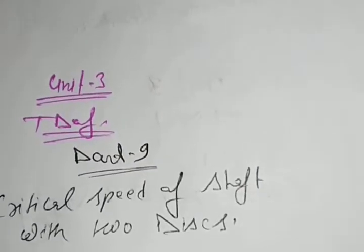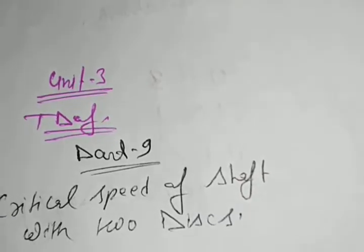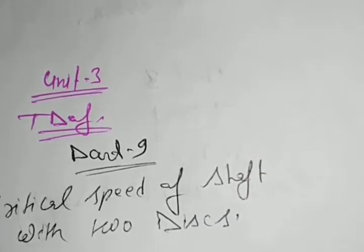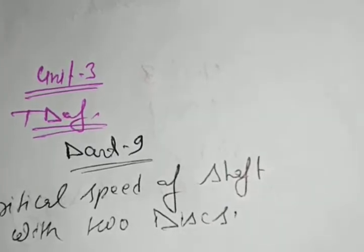Hello friends, so unit 3 we are learning vibration. That is a system having 2 degrees of freedom. Part 9 is about welding speed or critical speed of shaft with 2 discs. Clear?